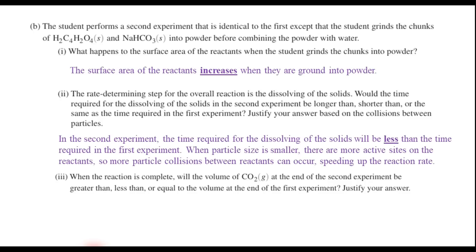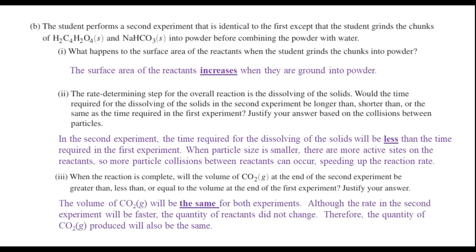Now, B3 says when the reaction is complete, will the volume of carbon dioxide gas at the end of the second experiment be greater than, less than, or equal to the volume at the end of the first experiment? And justify your answer. Well, I would say that it's going to be the same for both experiments. Now, even though in the second experiment it did go faster, the fact is, if you look up here at the header, it says that everything else is identical, except that the particle size is smaller. This implies that we have the same quantity of reactants. And so if we have the same quantity of reactants, we're going to have the same quantity of products too, aren't we? So that tells us that it should be the same.